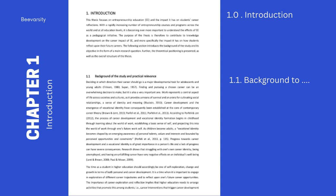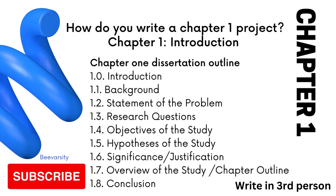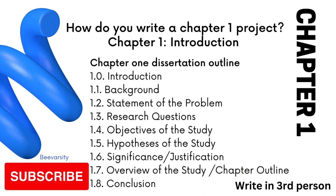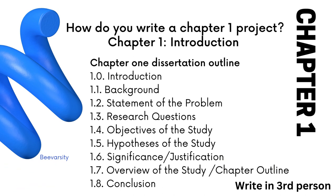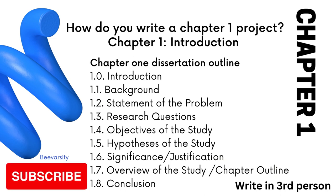Make it look neat — 1.0 Introduction, 1.1 Background. What often happens is people go into the introduction and start writing the background immediately — please don't do that. Have a 1.0 that introduces the chapter. Do this for every chapter. The structure of chapter one should be: 1.0 Introduction, 1.1 Background to the topic, 1.2 Statement of Problem, 1.3 Research Questions, 1.4 Objectives, 1.5 Hypothesis, 1.6 Significance, 1.7 Overview/Chapter Outline, and a Conclusion. Write your chapter one in the third person — no first-person pronouns. No 'I will now be doing this because I like this topic.' A dissertation is a formal document and should be written in the third person.